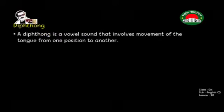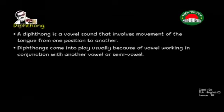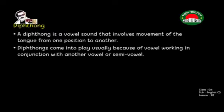Diphthong. Have you noticed the long O vowel sounds mentioned earlier started in one position of the mouth and ended in another within the same syllable? Repeat with me: 'O'. The lips are always rounded while pronouncing it, but at the end of the O vowel, the tongue moves up a little bit, so we produce the vowel as 'O'. This is called a diphthong — a vowel sound that involves movement of the tongue from one position to another. Diphthongs come into play usually because of a vowel working in conjunction with another vowel or semi-vowel.